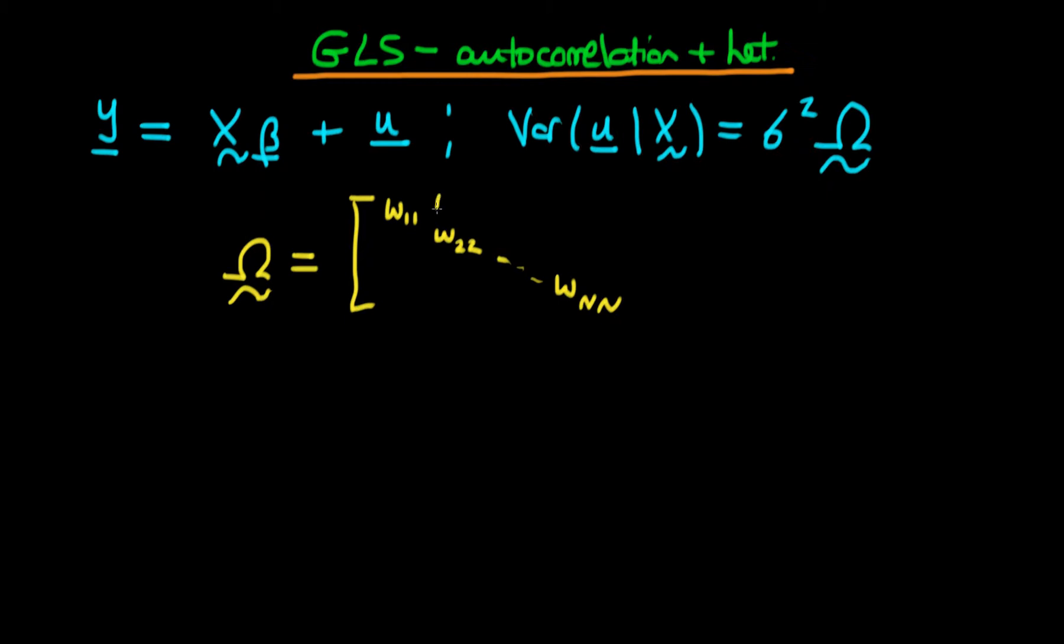But unlike before we're going to assume that this matrix also has off diagonal components. So the second component would be omega 1 2. And then if we continue all the way over to the right hand side, we would then have omega 1 n. And if we go all the way down to the bottom, we will also have omega n 1. And we could fill in all the various components in between.